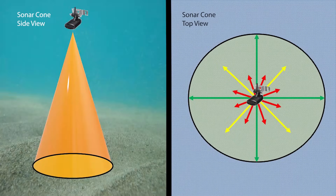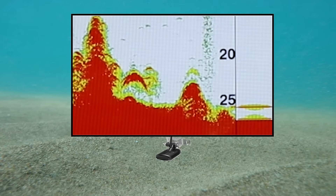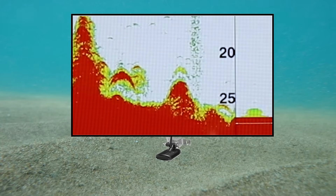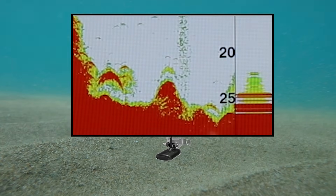As you can see from the illustration, our sonar's cone of view is three-dimensional; however, our fish finder receiver is taking that three-dimensional data and converting it to a two-dimensional image.